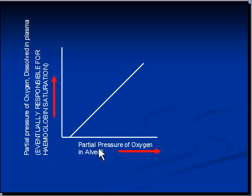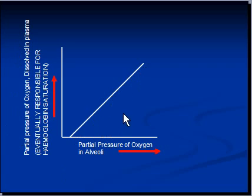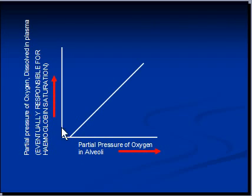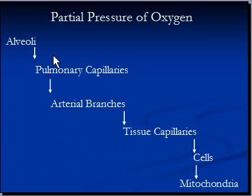In the graphical representation, as alveolar partial pressure of oxygen increases, the partial pressure of oxygen in plasma increases as well — forming a straight line, meaning these two factors are directly proportional. Notice there is a gap: the partial pressure of oxygen in alveoli will always be higher than in plasma, and this gap can increase depending on age, certain lung conditions, and other factors.